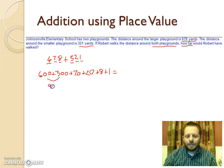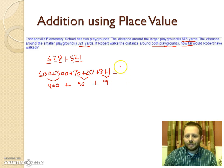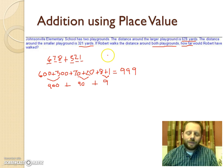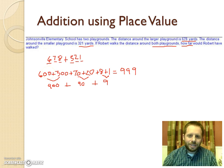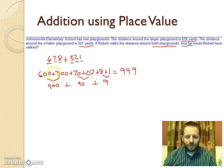70 plus 20 gives us 90, and 8 plus 1 gives us 9. Now we simply add those together: 900 plus 90 is 990, and 990 plus 9 more gives us a total of 999. Using the place value method makes the addition simpler - you can almost do it in your head, just adding 600 and 300, 70 and 20, 8 and 1. It's based on the place value of each digit.